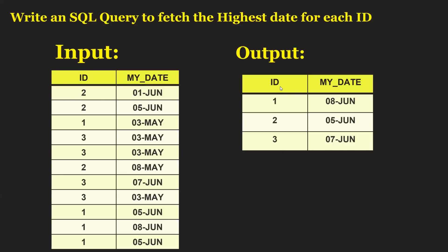The expected output is the maximum date for each particular id. For id 1 it is 8th June, for id 2 it is 5th June, and for id 3 it is 7th June. By seeing this you can directly use analytical functions — either dense_rank or row_number. However, there is a tricky part here which we will discuss while giving the solution.